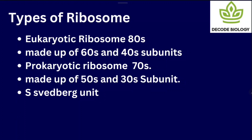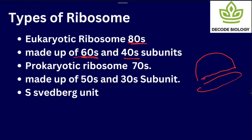There are two types of ribosomes: 70S and 80S. The eukaryotic ribosome is 80S, which is made of two subunits — the large subunit is 60S and the small subunit is 40S. Here, 'S' stands for Svedberg unit.